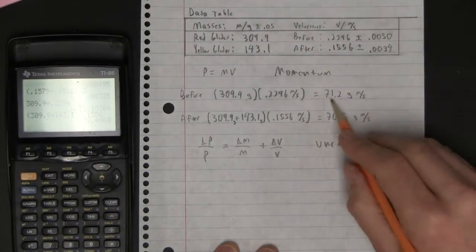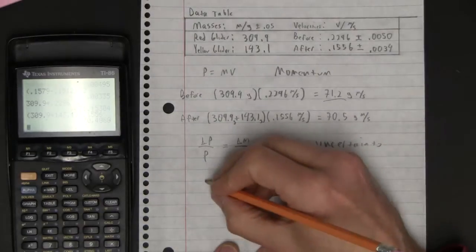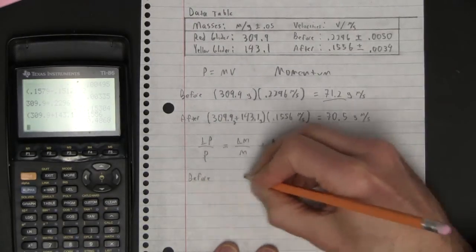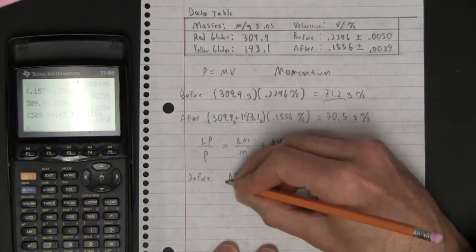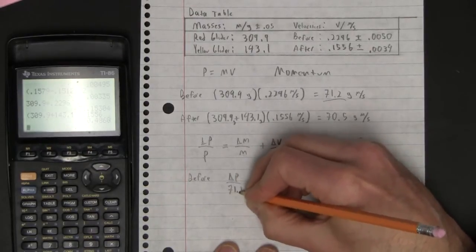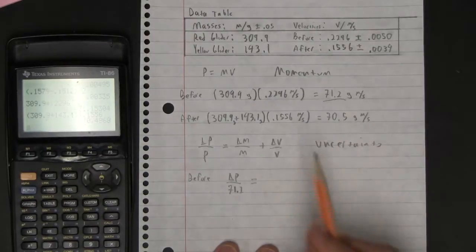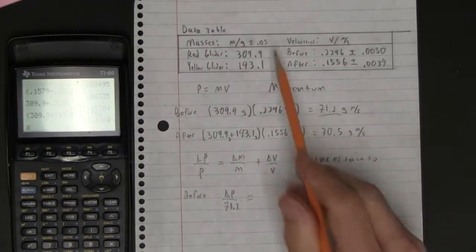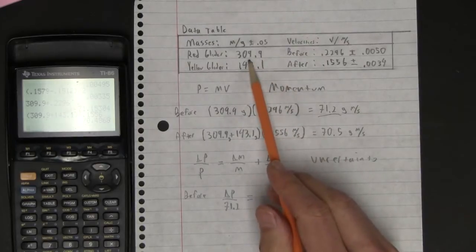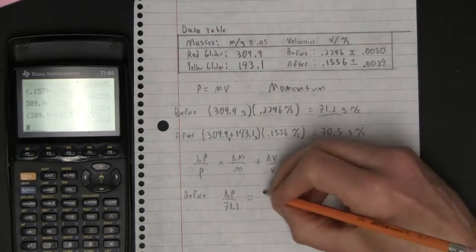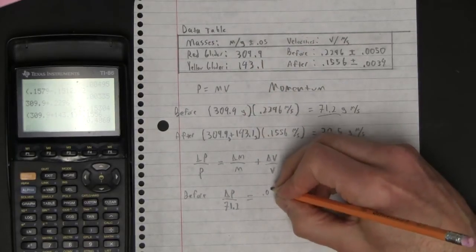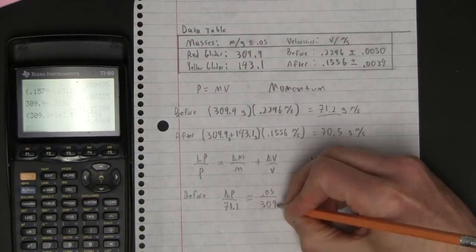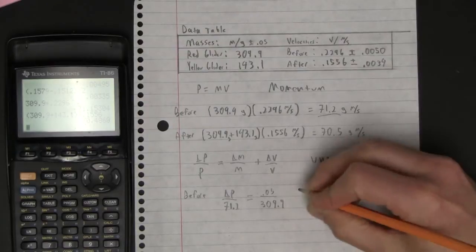Let's do the before. The momentum is 71.2. So I'm going to go, the uncertainty of the momentum is to 71.2. That's going to equal the uncertainty of the mass over the mass. The uncertainty of the mass is 0.05, the mass was 309.9, so I'm going to go 0.05 over 309.9.